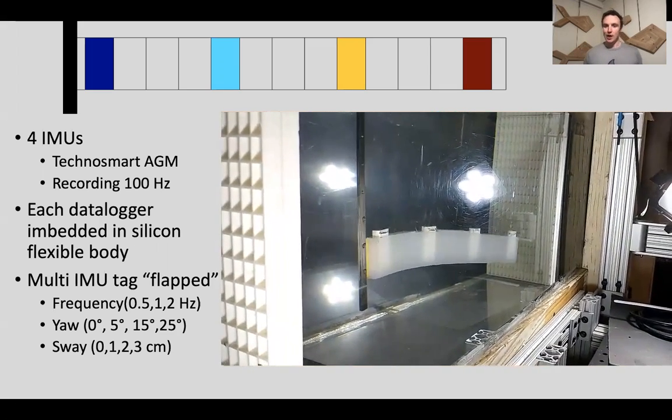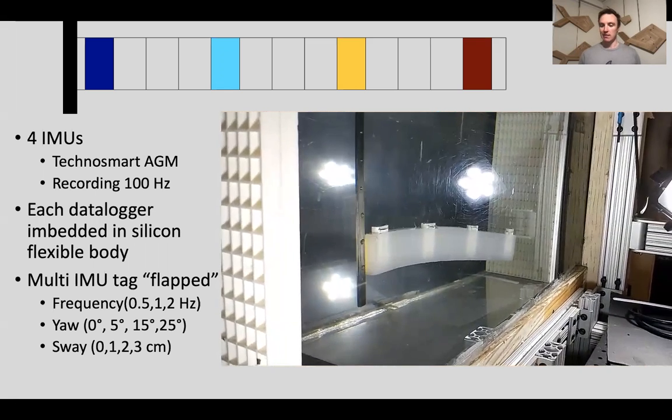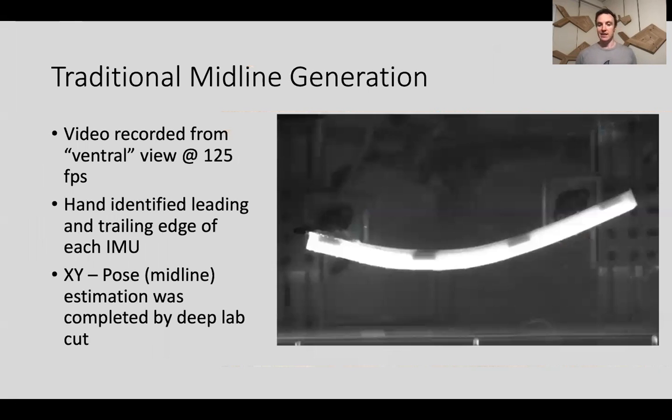However, to know how good of a job I was doing, I need to have true midlines. So while I was collecting all this data, I was simultaneously recording a ventral view midline kinematics using high-speed video. I would actually hand identify the leading and trailing edge of each tag in a subset of images, and then I trained a DeepLabCut neural network to automate this process and track each one throughout all my trials.